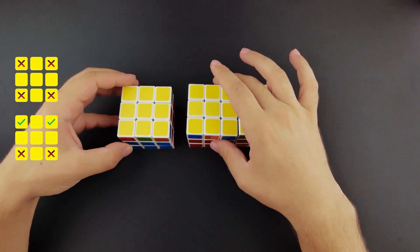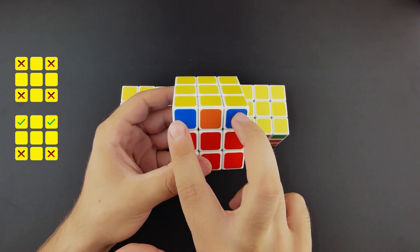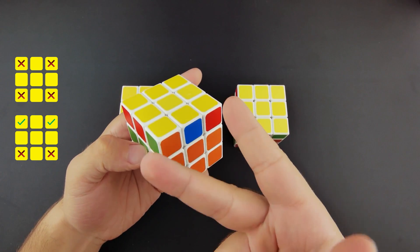Case 2: two of the yellow corners match each other, which means that the other two should swap positions.